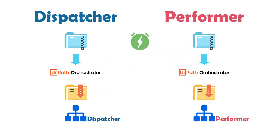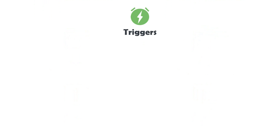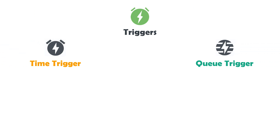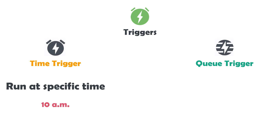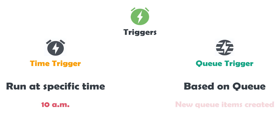Triggers are for scheduling processes in Orchestrator to start automatically. There are two types of triggers: time triggers and queue triggers. A time trigger means that we want a process to run at a specific time, such as 10 a.m. A queue trigger means that we want to schedule a process based on a queue — the process is only started when a new queue item has been loaded into the queue. That was a little reminder about the triggers.